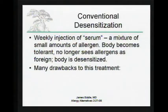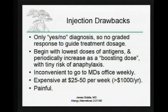The conventional approach to immunotherapy uses serum injections — giving shots of the antigen you're allergic to. The drawbacks include a yes-no diagnosis with no graded response to guide treatment. You have to start at zero, give the lowest dose of antigen, and gradually increase it, during which there's a small but non-zero risk of anaphylaxis — people do occasionally die from it. It's also inconvenient to go to the doctor's office every week, expensive at $25 to $50 per shot — over $1,000 per year — and of course painful.